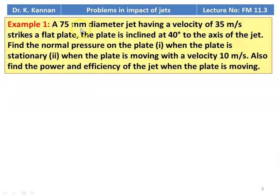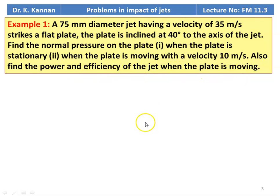Example number 1. A 75 millimeter diameter jet having a velocity of 35 meters per second strikes a flat plate. The plate is inclined at 40 degrees to the axis of the jet. Find the normal pressure on the plate: (1) when the plate is stationary, (2) when the plate is moving with a velocity of 10 meters per second. Also find the power and efficiency of the jet when the plate is moving.